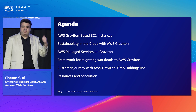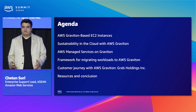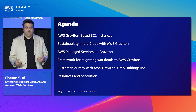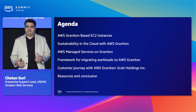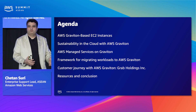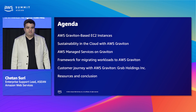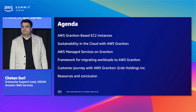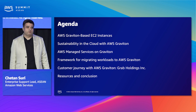We have an exciting agenda lineup for today. I'll start by sharing the silicon innovation on AWS and Graviton instances, then how Graviton processors are designed to maximize performance, and a framework on how you can move your workloads from x86-based instances to Graviton. Then I'll invite Mark on stage to share how Grab moved more than 300 applications to Graviton and some of the key learnings and takeaways.